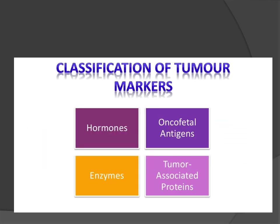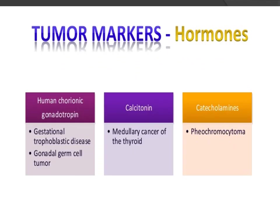The classification of tumor markers begins with hormones, which include HCG (human chorionic gonadotropin), calcitonin, and catecholamines. HCG is increased in gestational trophoblastic disease and gonadal germ cell tumors. Calcitonin is increased in medullary cancer of the thyroid, and catecholamines in pheochromocytoma.